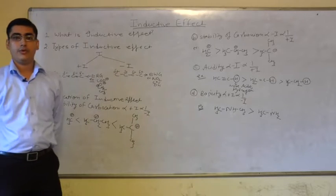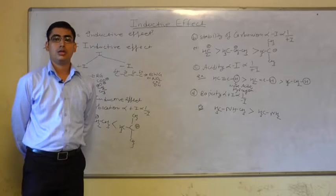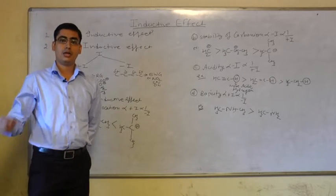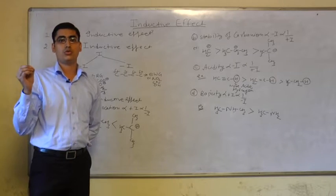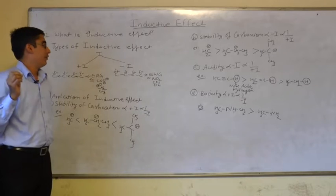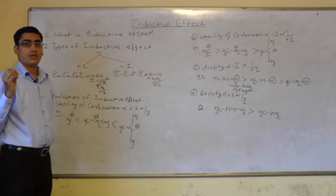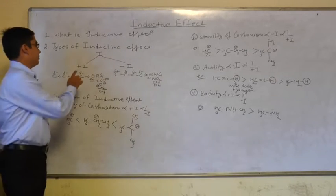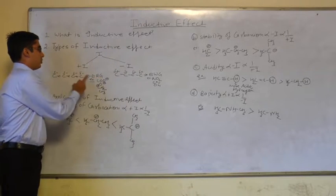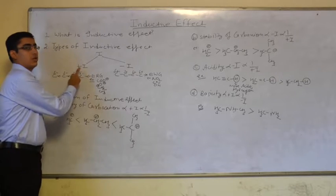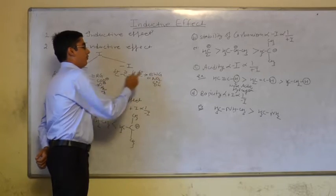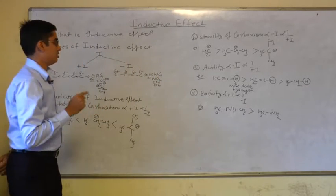What is the inductive effect? Inductive effect is the electronic displacement of the electrons in the carbon chain when we add any electron releasing group or electron withdrawing group. There are two types of inductive effect: plus I and minus I. When we add an electron releasing group to the carbon chain, this is known as plus I effect, and when we add an electron withdrawing group in the carbon chain, this is known as minus I effect.